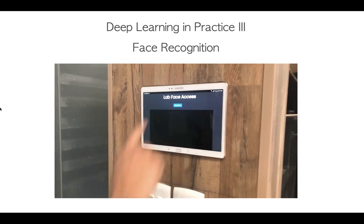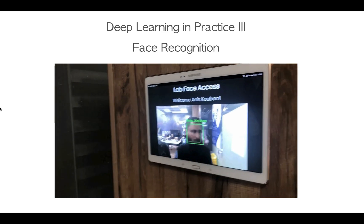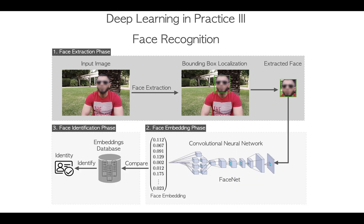In this course, you will learn the fundamental concepts of face recognition systems and you will be guided to build your own face recognition application. You will learn the whole loop of face recognition systems, which starts by extracting the face from an image and localizing the face by its bounding box. Then we process the extracted face through a convolutional neural network called Facenet to create a fingerprint of the face, which we call a face embedding. The face embeddings can be stored in a database and compared with other face embeddings to identify the person of interest. I will show you how to develop a Python application that performs all these operations.